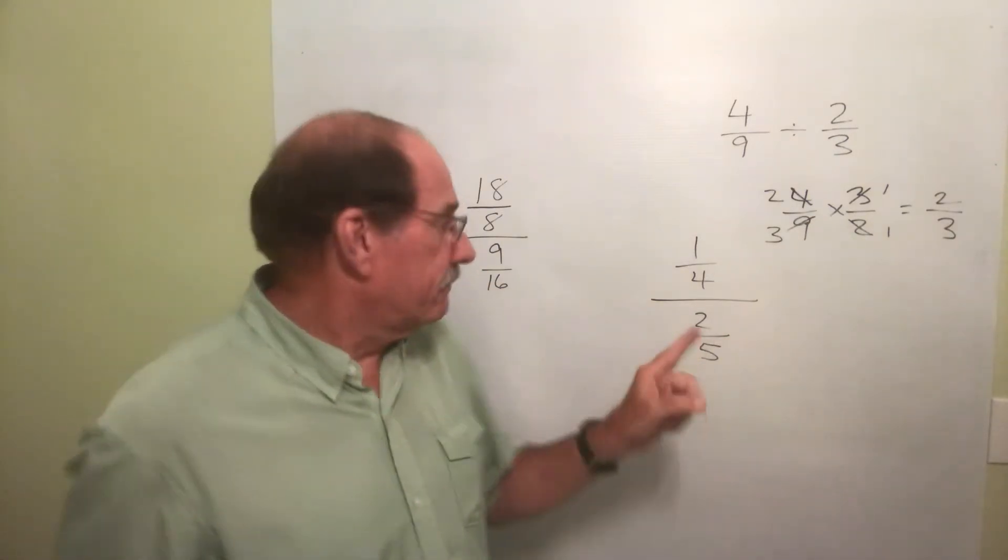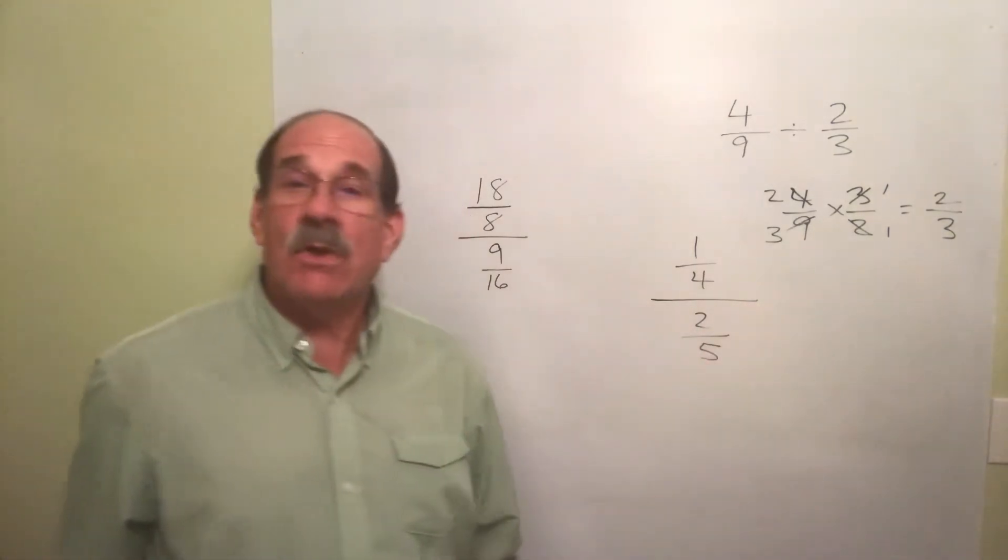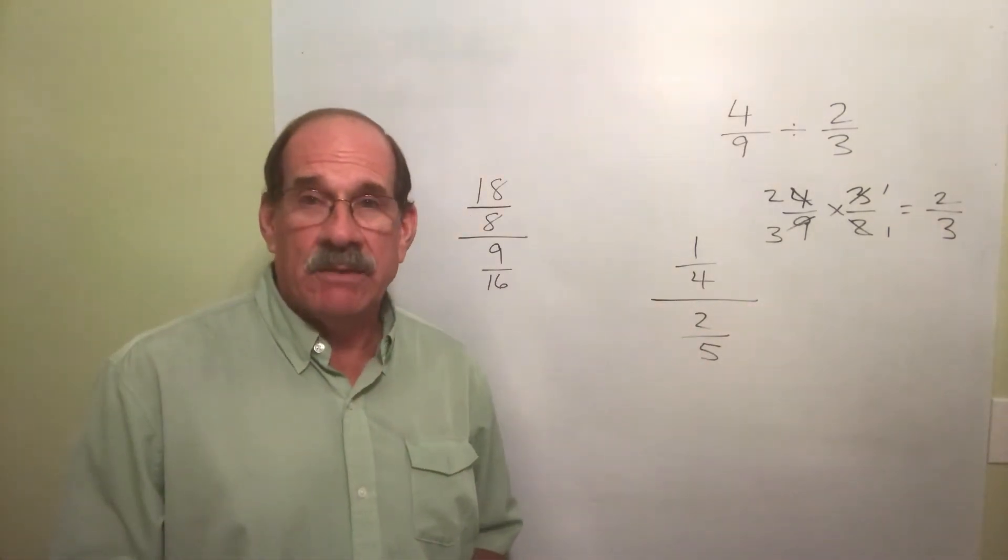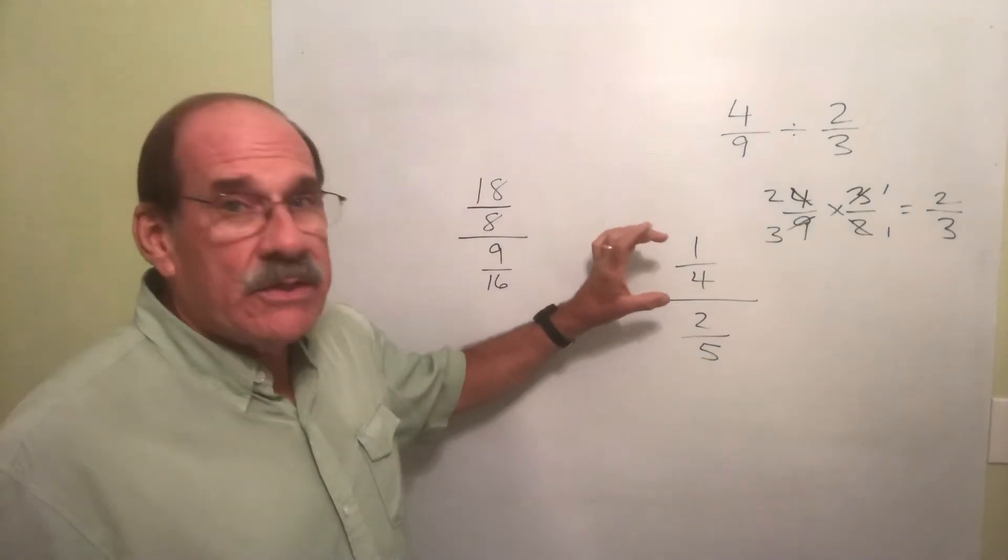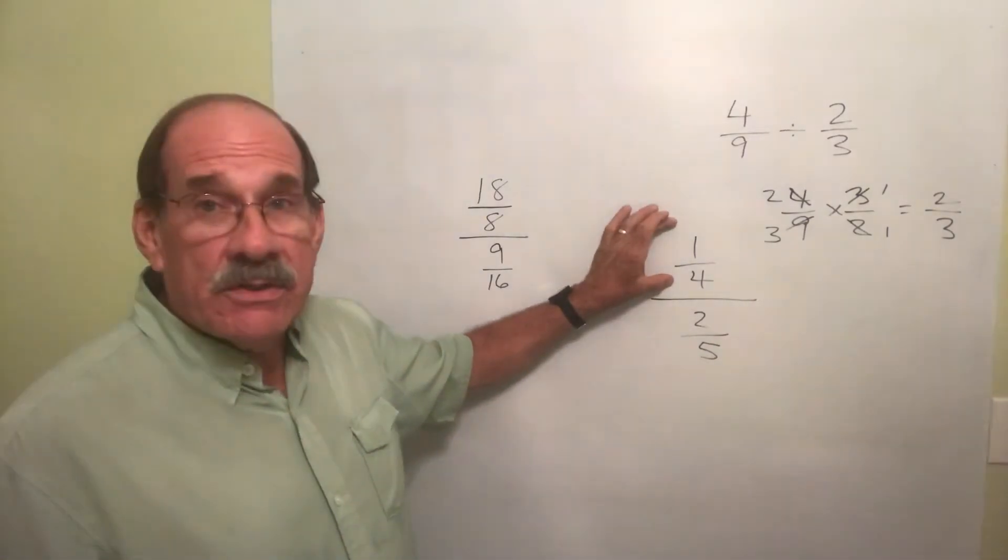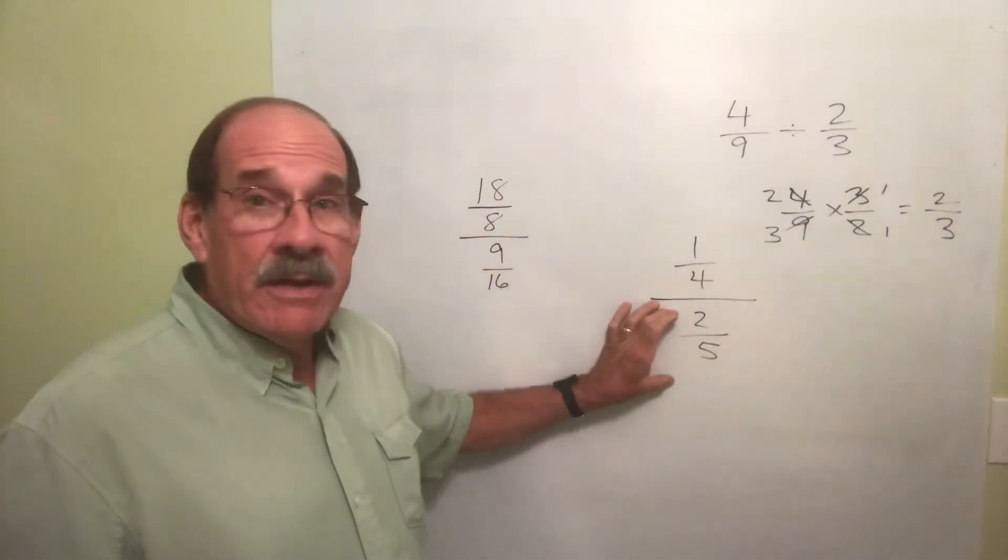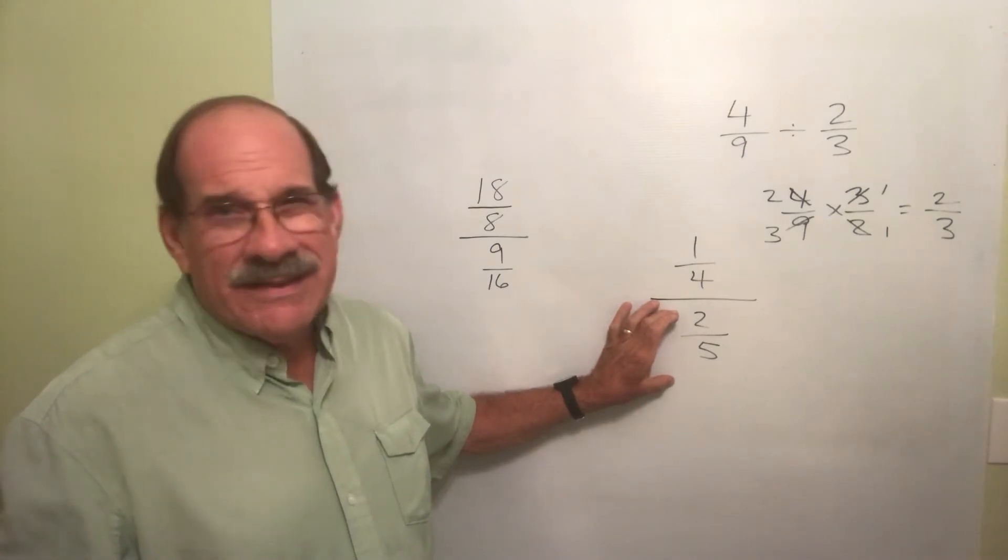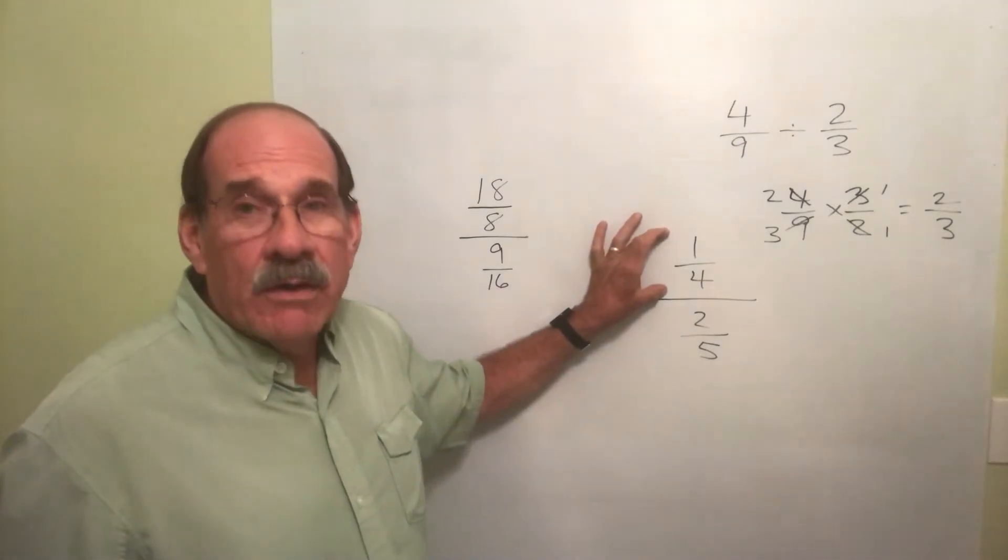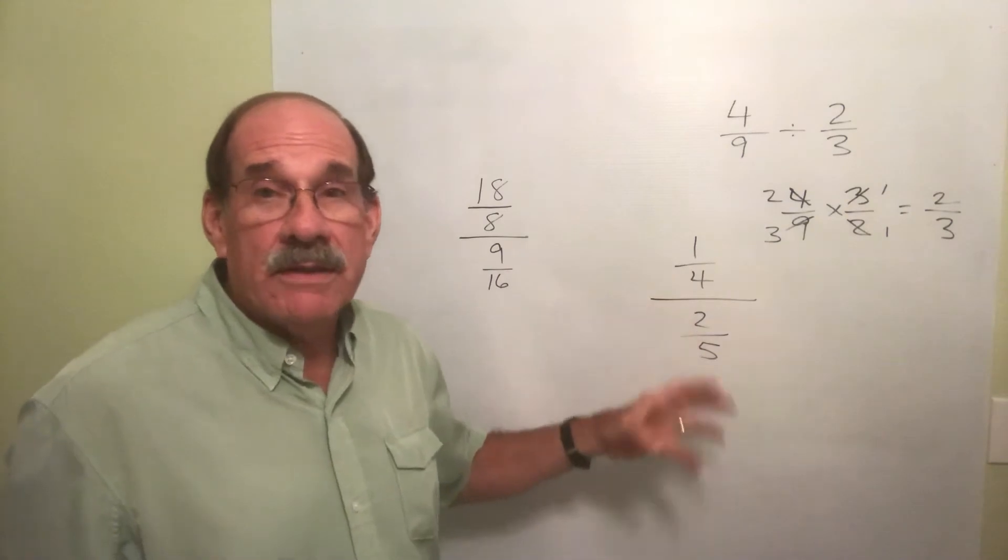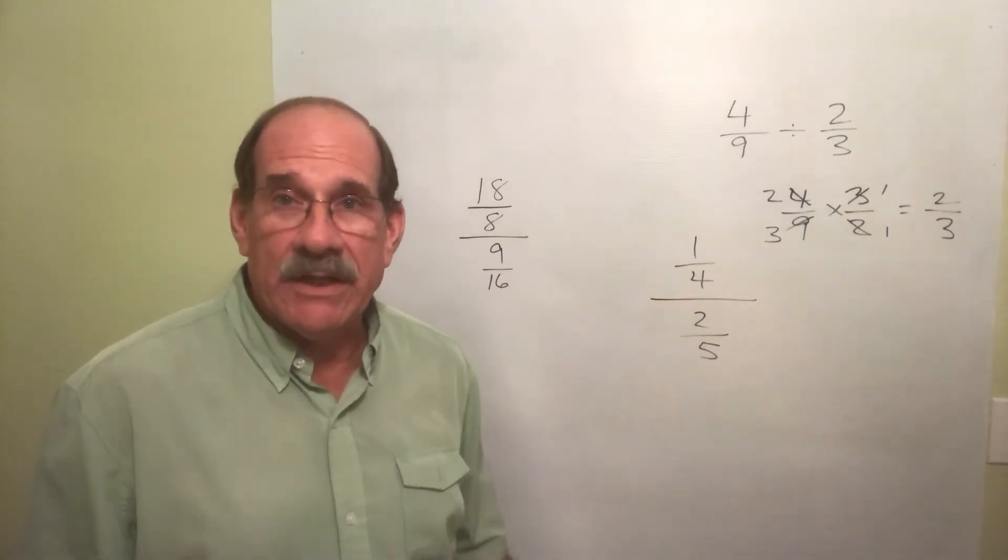But here's another kind. Right here. It's called a complex fraction. Well named, right? This is where in this case, the numerator is itself a fraction. Denominator is too. Technically, if the numerator or denominator or both are themselves fractions, that's a complex fraction.